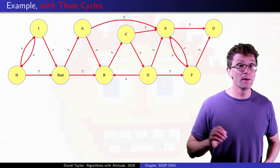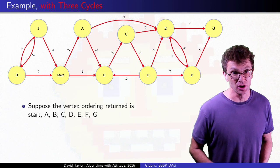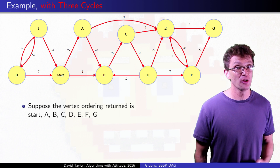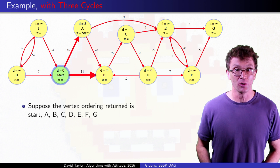So in this case, we imagine that we get vertices in the order start, A, B, C, D, E, F, G. H and I aren't reachable, they don't make it into the list. Relax outgoing edges from vertices in that order.